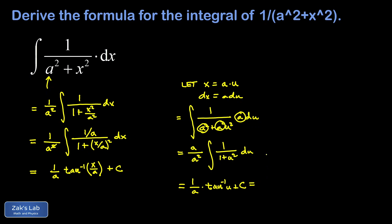I still have to state the final answer in terms of x, so I replace u with its definition in terms of x. From my substitution I can solve for u, which is x over a. Finally I end up with 1 over a inverse tangent of x over a plus c, and we get to the same answer.